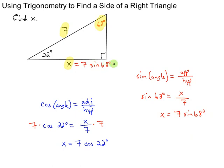And if you plug that in your calculator, you will also get approximately 6.5. So there's two different ways to calculate the same side using two different angles.